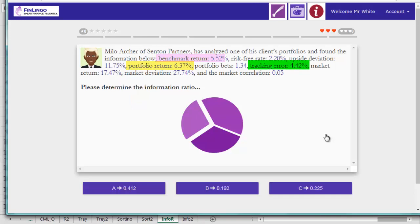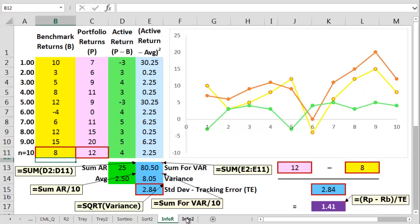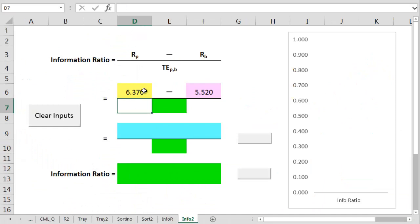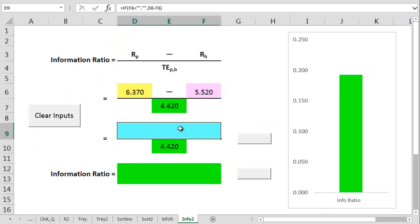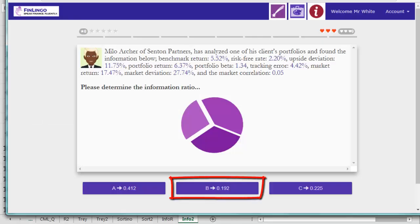We've also got a supplied tracking error of 4.42%. Let's move those figures then to another amazing spreadsheet. We take 5.52 away from 6.37 and this gives us 0.85. Then we divide this by 4.42 to get to an information ratio of 0.192.